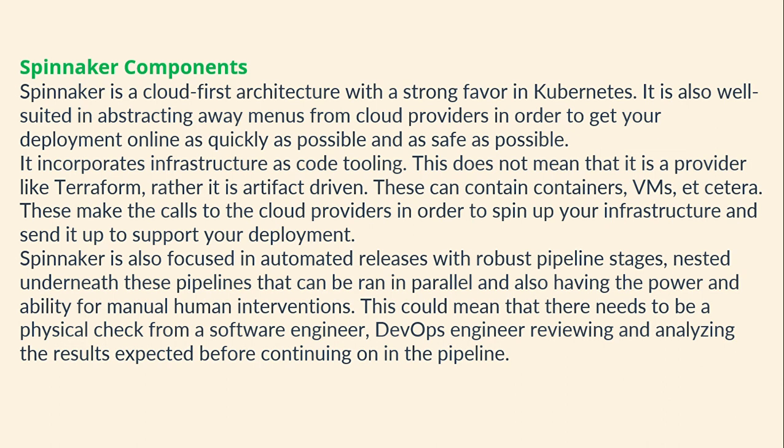Spinnaker is also focused on automated releases with robust pipeline stages. Pipelines can be run in parallel and also support manual human intervention — for example, a physical check from a software engineer or DevOps engineer to analyze the expected results before continuing the pipeline.